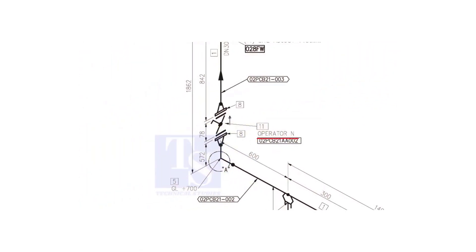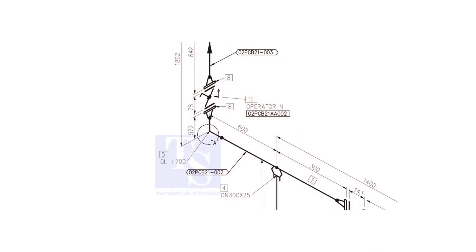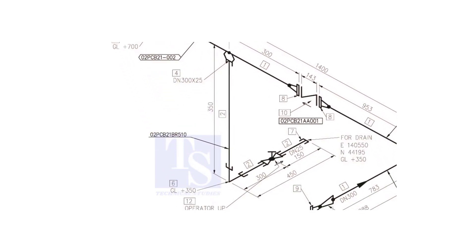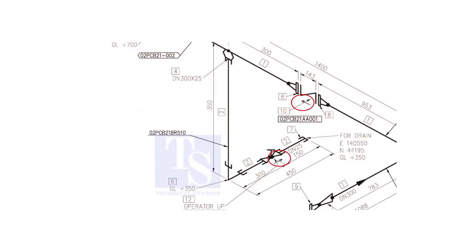What is operator N? It means the handle of the valve will be on the north side. Another thing is the arrow mark — it shows the direction of the valve. Never neglect this mark. Usually, you will see this direction arrow on check valves and globe valves.